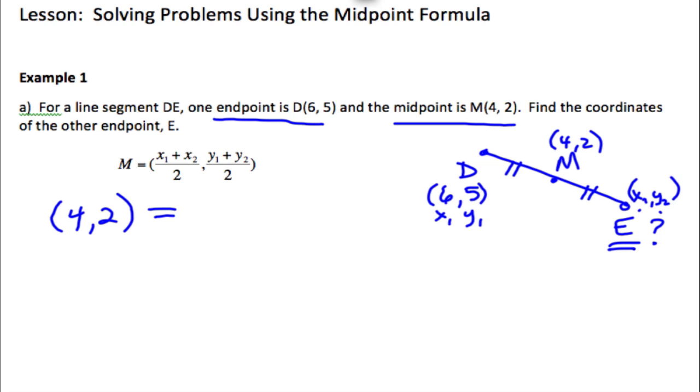So we do have this ordered pair here, 6, 5. So when I look at my ordered pair, I know the 6 is X1 and I know the 5 is Y1. And I know that this will be divided by 2.